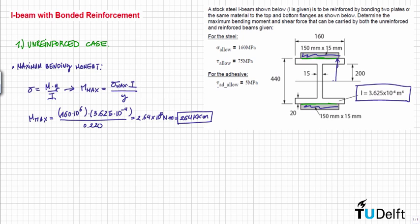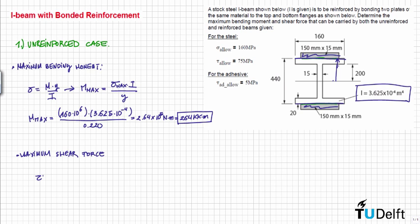The shear stress is given by V times Q divided by the moment of inertia times T, so from this formula we have that V is equal to tau times I times T divided by Q.